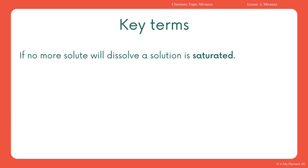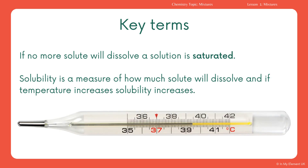If you've added that solute into the solvent and no more will dissolve, that means the solution that has been formed is completely saturated — there's no more space for that solute to fit in. Solubility is a measure of how much solute will dissolve. If there is a higher solubility, more solute will dissolve in the solvent. And as the temperature increases, it also increases the solubility of the solute in the solvent.